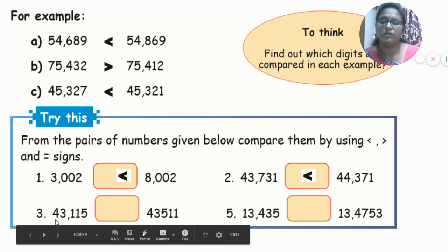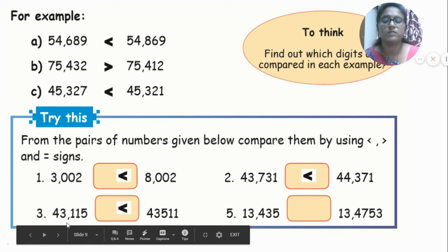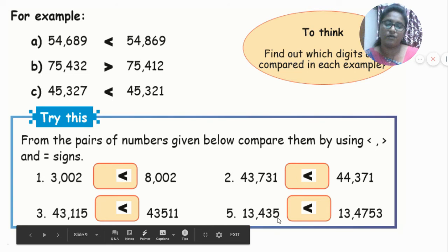Next: 43,115 compared to 43,511. Ten-thousands: both 4. Thousands: both 3. Hundreds: 1 versus 5 — 1 is smaller. So 43,115 is lesser than 43,511. Next: 13,435 compared to 1,34,753 — 13,435 is lesser than 1,34,753.